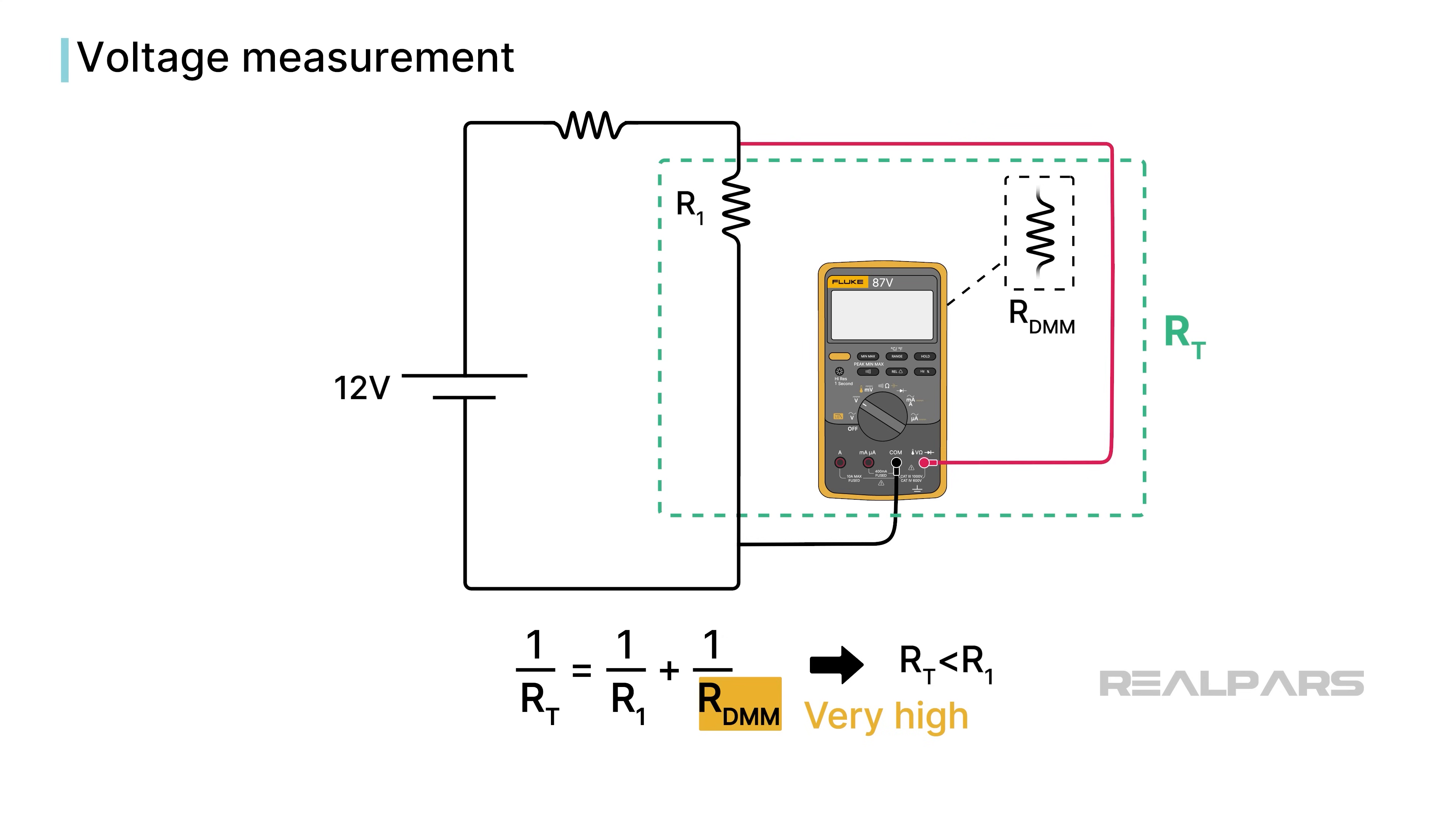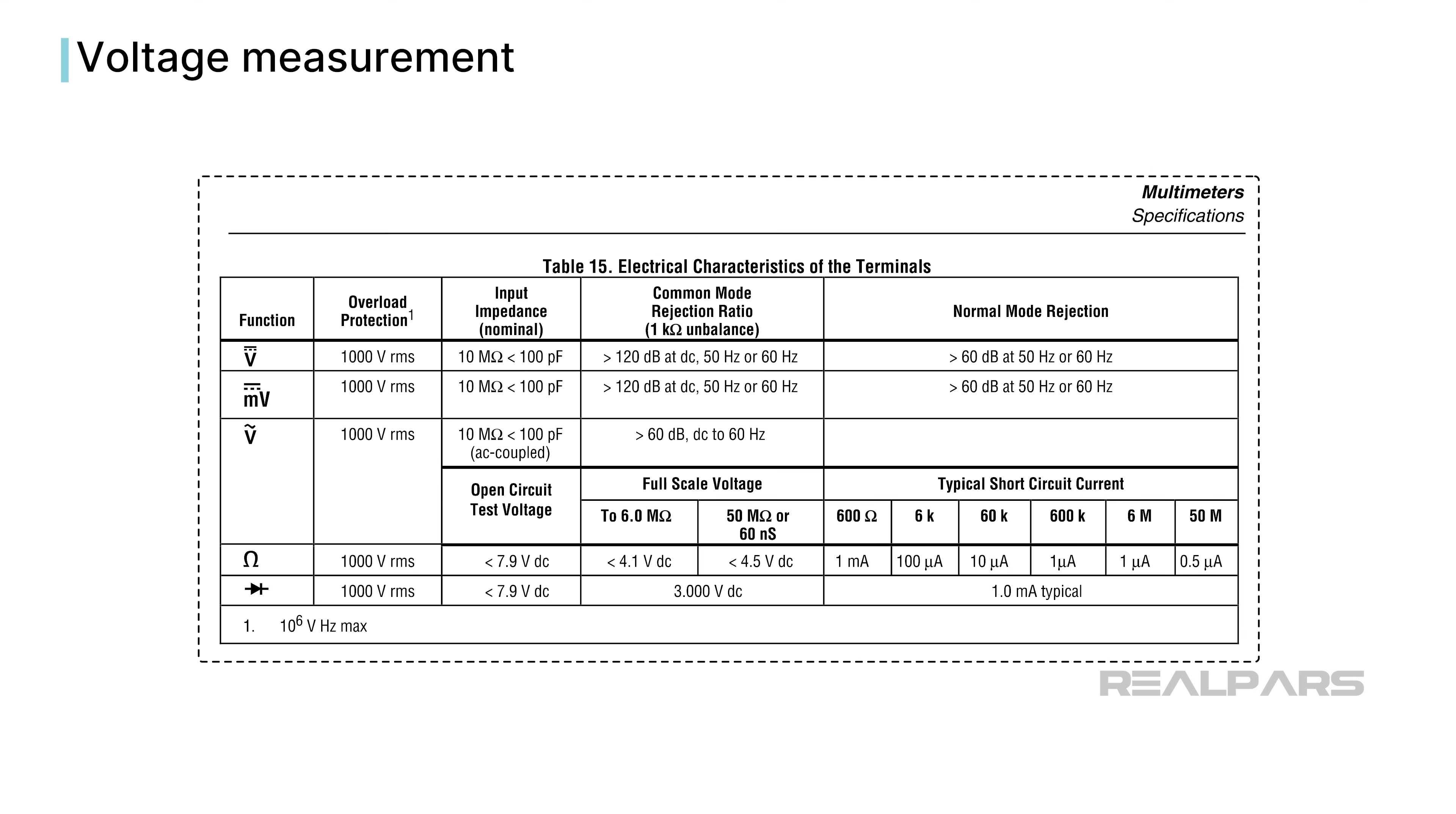A perfect voltmeter would have infinite resistance, but that isn't possible. The Fluke 87-5's input impedance, or resistance, is 10 megohms, which is standard for most DMMs today.